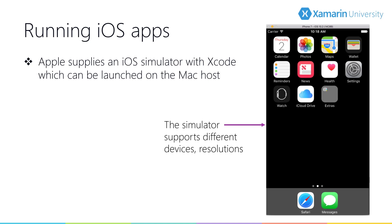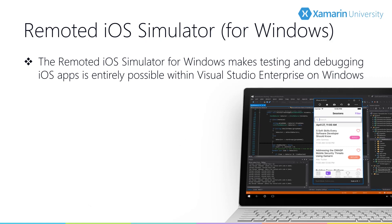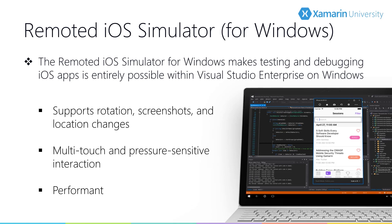The simulator supports a variety of devices and resolutions as well as different versions of iOS. Only the latest iOS release is installed by default, but you can use Xcode to install older iOS versions. Xamarin also provides a remoted iOS simulator for Windows developers, letting you view and interact with your iOS applications right from Windows. Your application runs on your Mac but is visualized on Windows. There are great benefits to this — for example, we have touch on Windows laptops, so we can use that touch to interact with the simulator just like a real device.